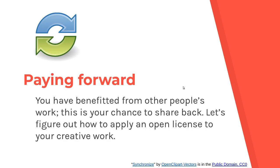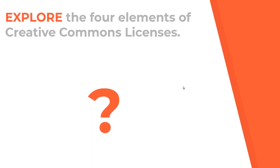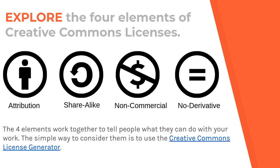Below we show the elements that can be part of Creative Commons. There are four elements and they can work together to tell people what they can do with your work. The simplest way is using the Creative Commons license generator. This is the link in case you want to go into more detail, and in another video I will show you how easy it is to generate a license.